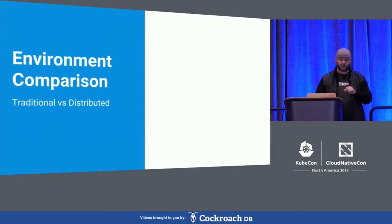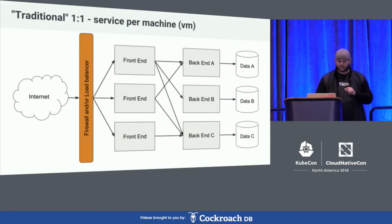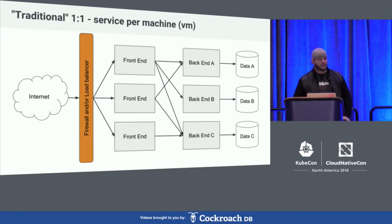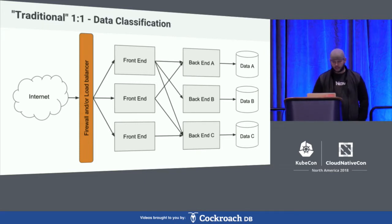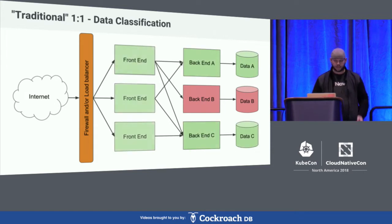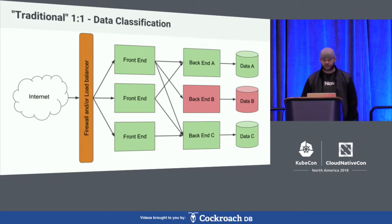Knowing those classifications, let's look at environments — traditional versus distributed. In a traditional environment, a very basic one, you've got a load-balanced front end with multiple back ends, and those back ends all have data stores. If you have red data, that will match your service classification, and likewise for green data. If you're not storing data, you can be classified as a green service.